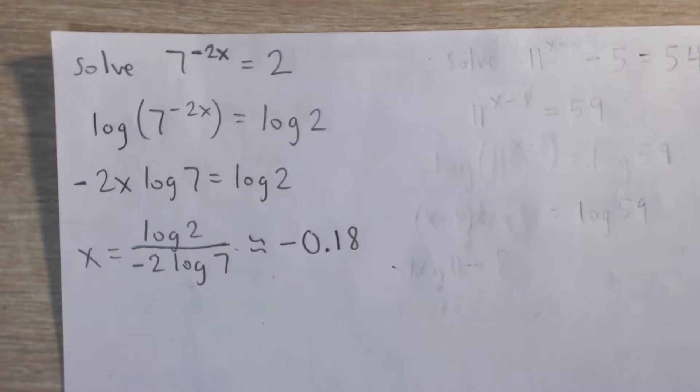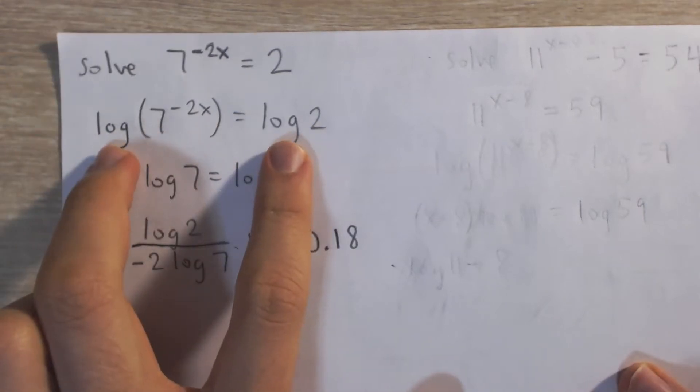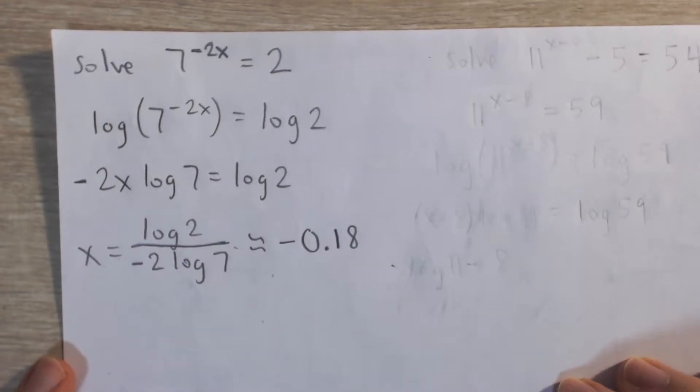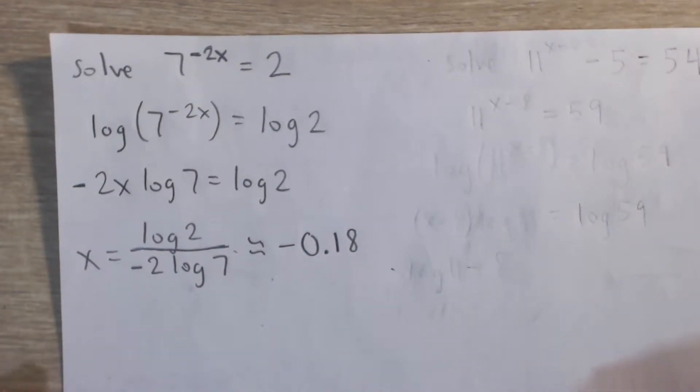What we're going to do is take the log of both sides. Now, it can be any base. I just use the common logarithm, base 10, because it has a button on a calculator, so it's easy to work with. But in theory, you can use any log base you want.